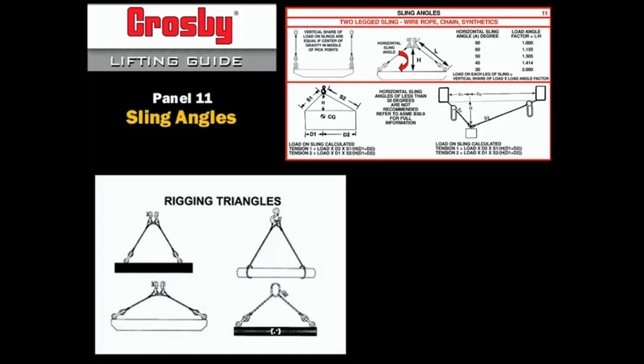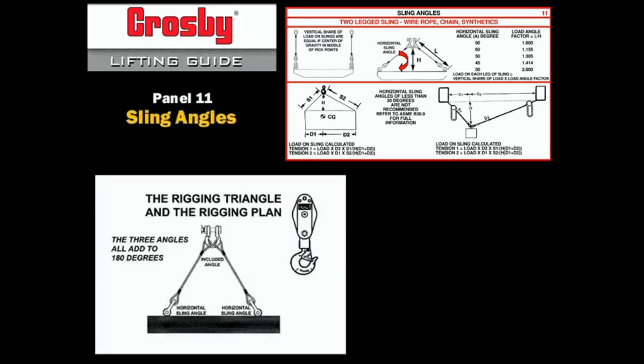There are several things about the rigging triangle that should be reviewed. The included angle is checked for proper connection of the hoist hook or collector ring. The horizontal sling angle must be known to properly select slings and fittings at the load connection.